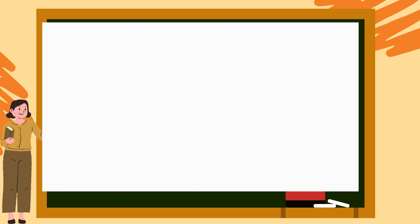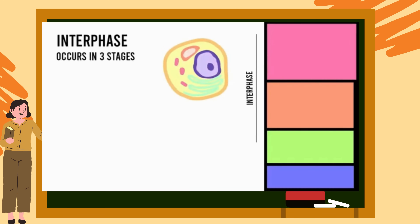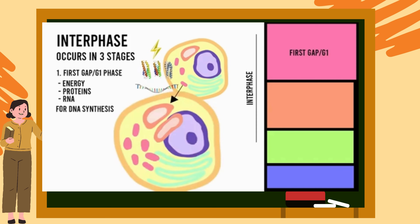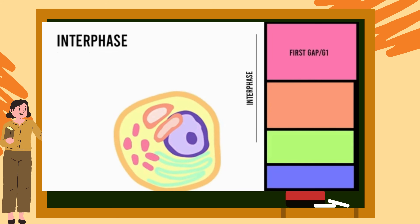Let's start by investigating interphase. Interphase occurs in three stages. The first stage is known as the first gap or the G1 phase. During the G1 phase, the cell accumulates the energy, proteins, RNA and other building blocks needed for DNA synthesis, which occurs in the next stage. Furthermore, the cell grows larger and duplicates some of its cellular contents and organelles.